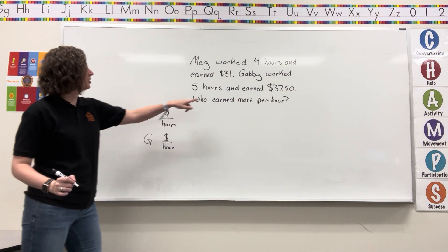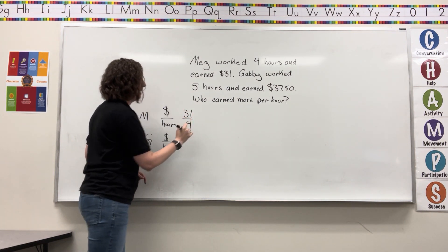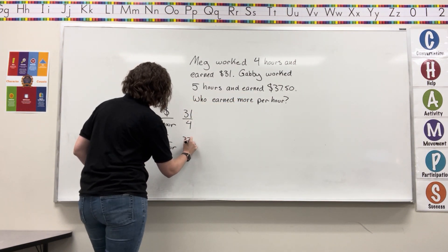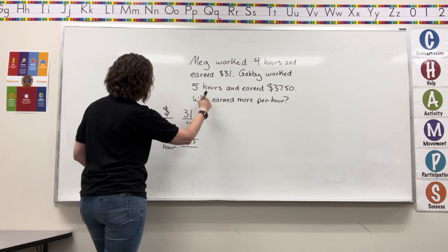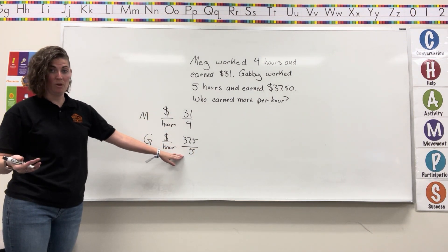So Meg earned $31 in four hours. Gabby earned $37.50 in five hours. Make sure that your rates are set up the same way.